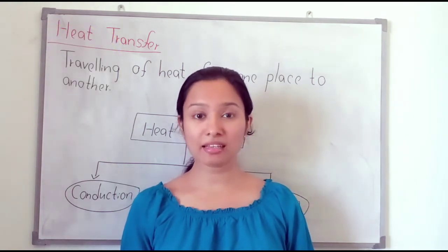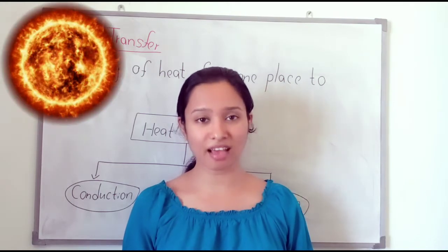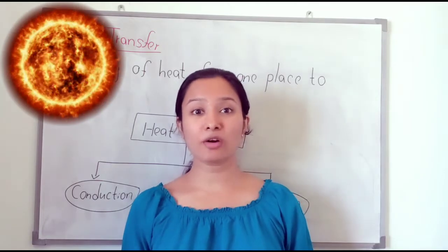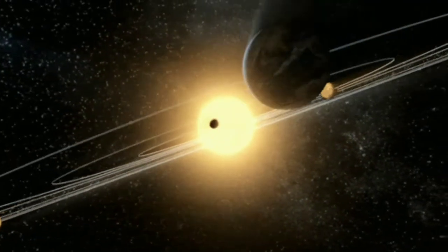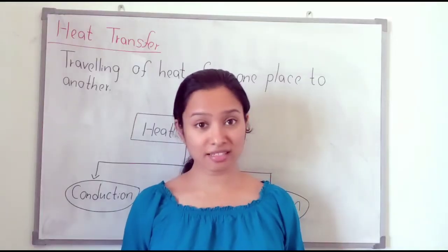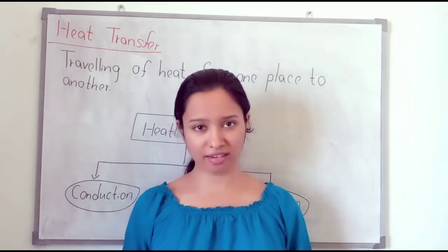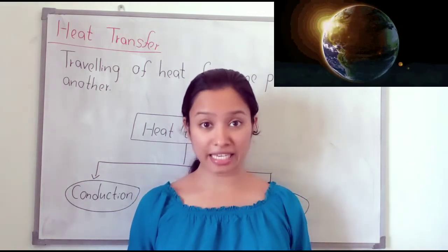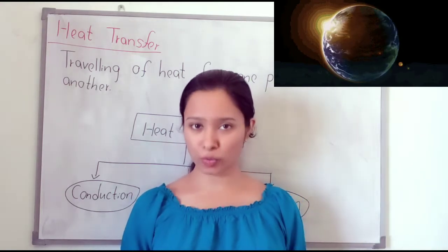Our main source of heat energy is the sun. The sun is millions of kilometers away from our earth, yet we receive the sun's heat very quickly. That means the sun's heat travels to our earth very quickly.